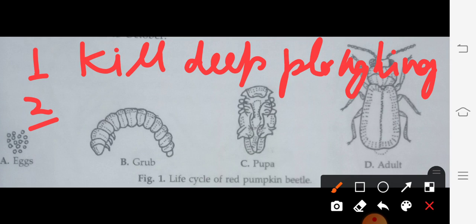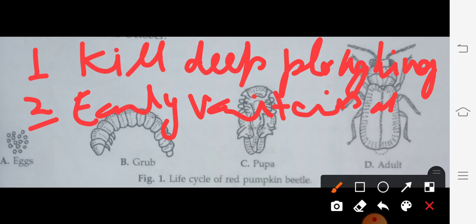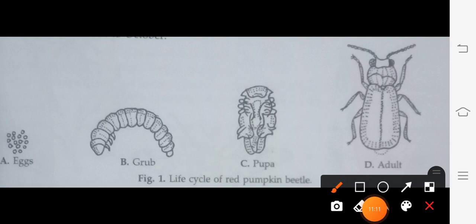Secondly, early varieties of these vegetables should be sown.